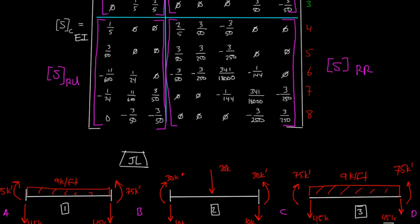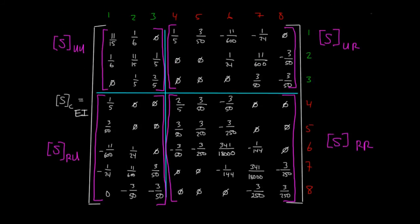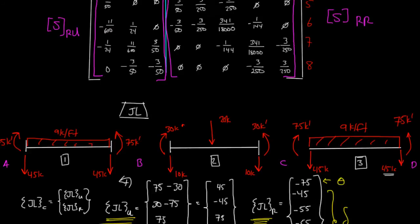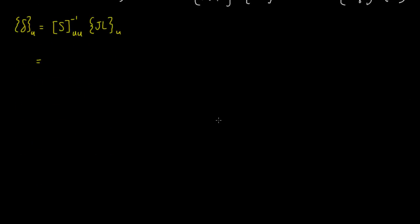Now, if we look back from earlier on, we had this S sub complete matrix, and our S sub uu matrix was this matrix right here. If we plug this matrix into our calculator and we told our calculator to invert that matrix, or if we just did a matrix inversion, this is what we would get.